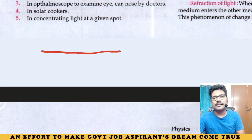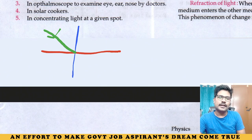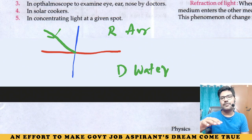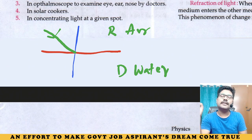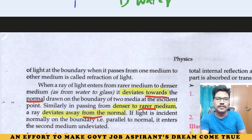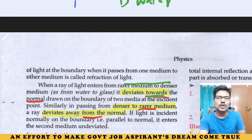There is a normal — perpendicular — and there is a light ray entering. Suppose this is rarer medium, that is air, and this is denser medium — water. Water has more density. When a light ray enters from rarer to denser medium, it deviates towards the normal.